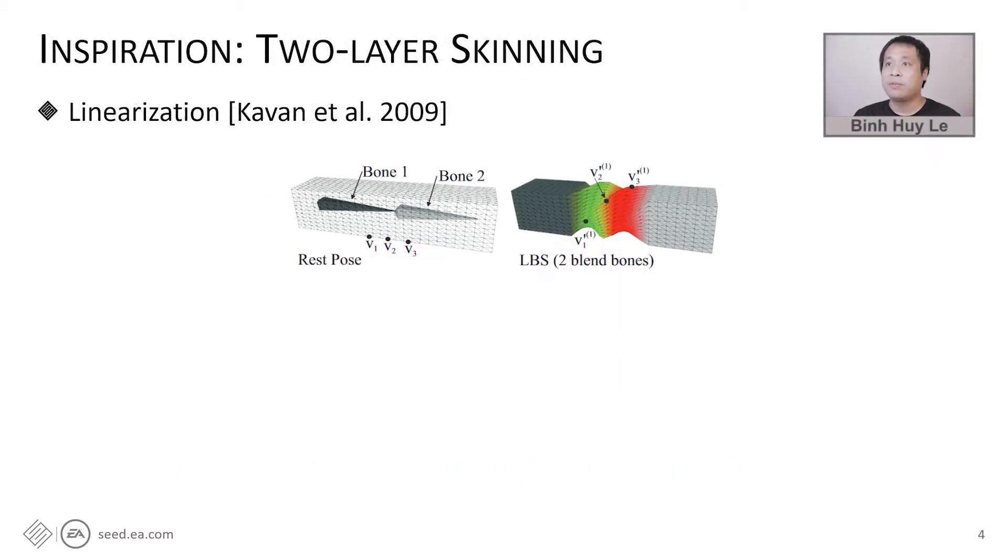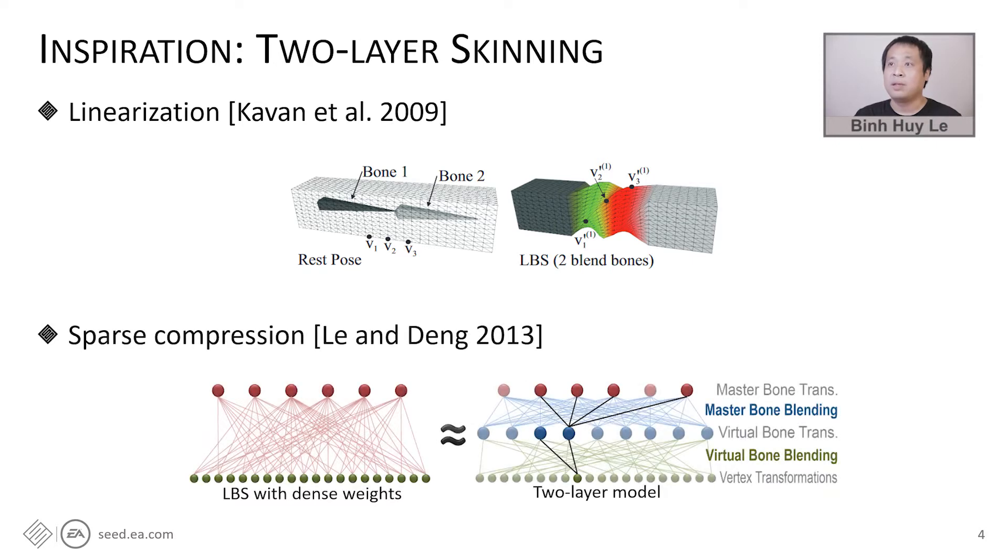To improve the performance of DDM, we have a look into the previous two-step skinning process. Kavan and Kollish accelerated dual quaternion skinning by first computing the expensive dual quaternion blending to a small set of vertebrals, and then performing a cheaper LBS to all vertices. Li and Deng proposed a similar two-layer setup to handle LBS with dense weights. The first layer is a dense but small LBS, and the second layer is a large but sparse model that computes proper vertex transformations from the output of the first layer.